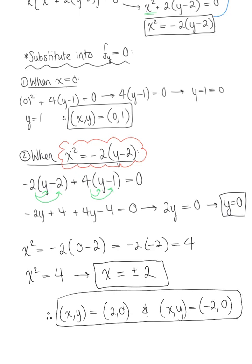In total, we have three potential critical points: (0, 1), (2, 0), and (−2, 0). We can't make any conclusions other than that they may be critical points or extrema — we cannot classify them until we apply the second derivative test.